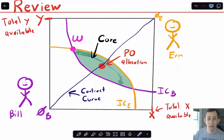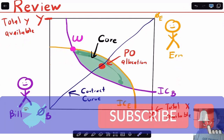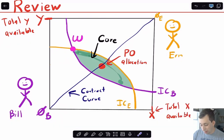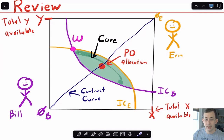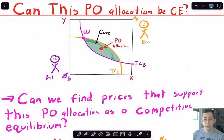If you want a full review, part one is in the upper right corner and linked below. The Pareto optimal allocation is going to be in the core, because both Aaron and Bill have to be at least as well off as they were before when they entered the trade. In the core, both people are actually better off — those are Pareto improvements. When we can no longer make any Pareto improvements, that means we're at the Pareto optimal point. Suppose the Pareto optimal allocation is right here.